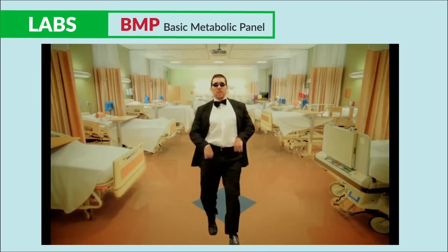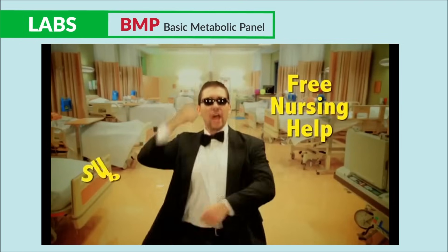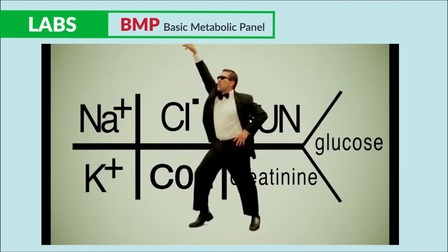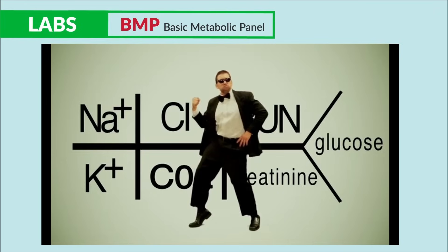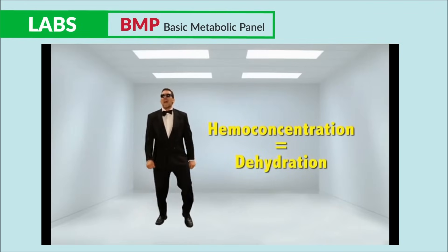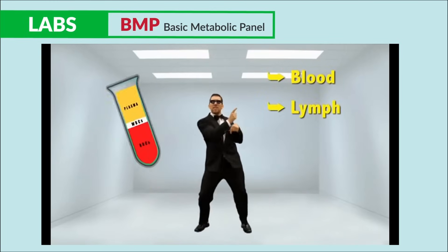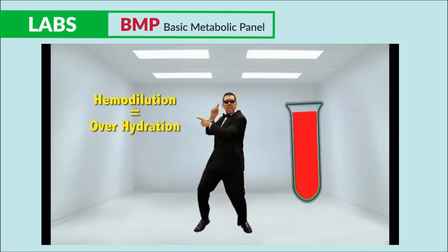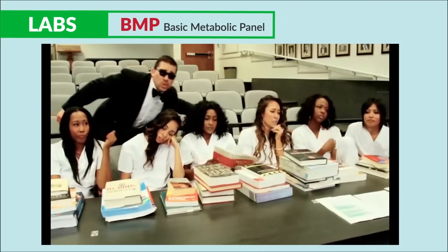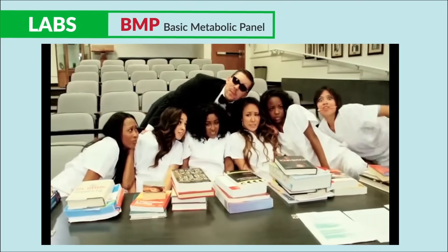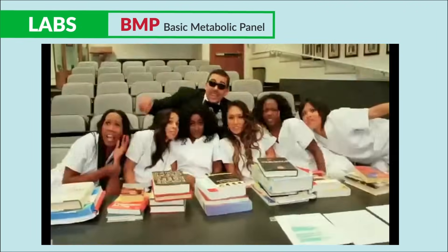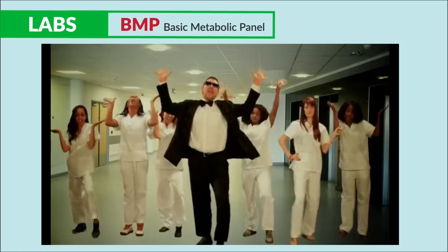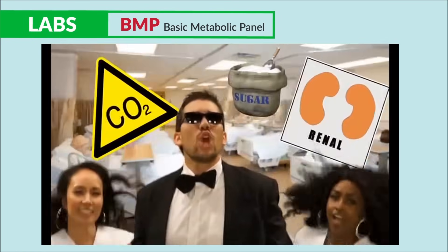Hey nursing students, confused about the BMP panel? Get three hours of nursing help by subscribing to this channel. Many nursing subjects are pretty tough to handle, so let's simplify this BMP panel. Hemoconcentration is an indication of dehydration — too much solute in the blood. Hemodilution indicates overhydration — increased fluids in blood and vascular spaces. Nursing students, you need to know your BMP: sodium, potassium, calcium, BUN, CO2, glucose, and creatinine.